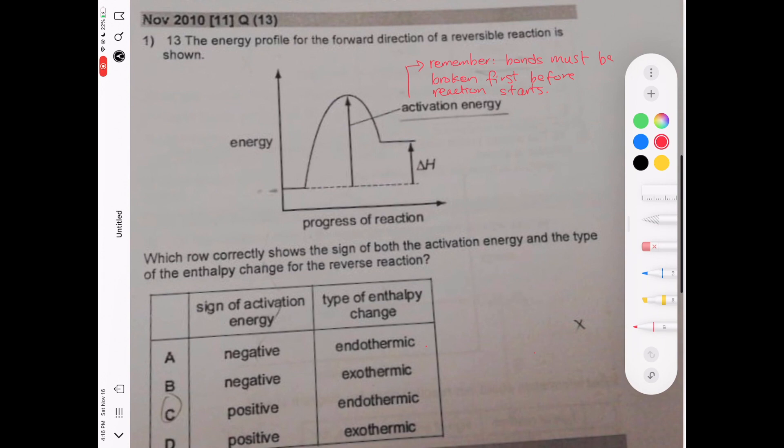This question asks about the energy profile for the forward reaction. Remember this is a forward reaction for a reversible reaction. Obviously because it absorbs a lot of energy and then produces just a little bit of energy, it's an endothermic reaction.